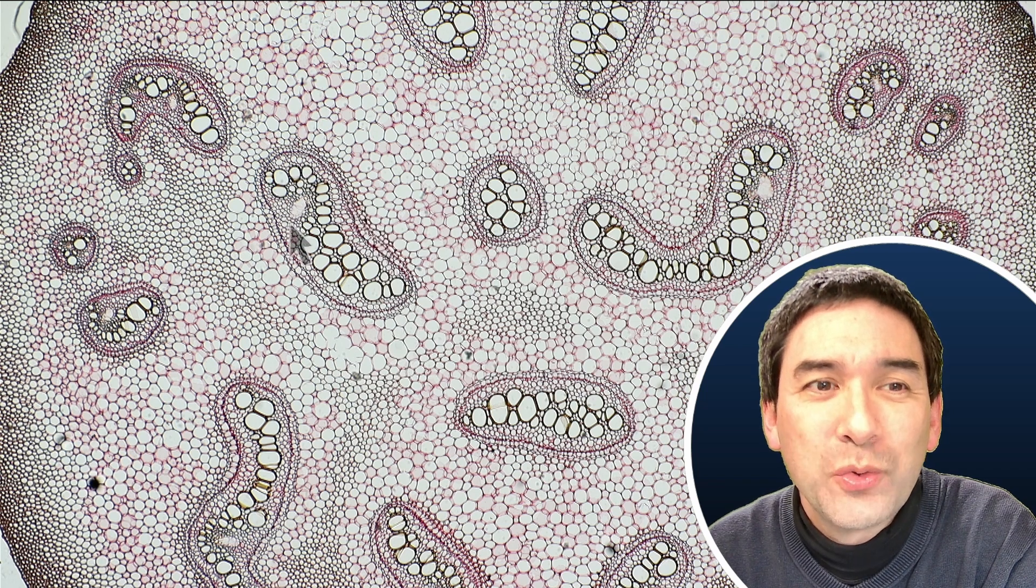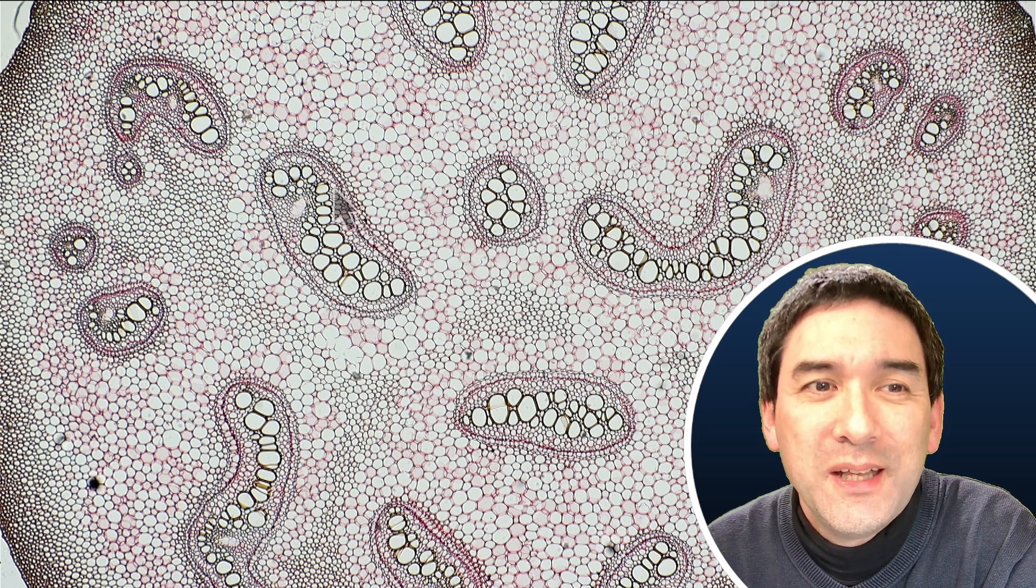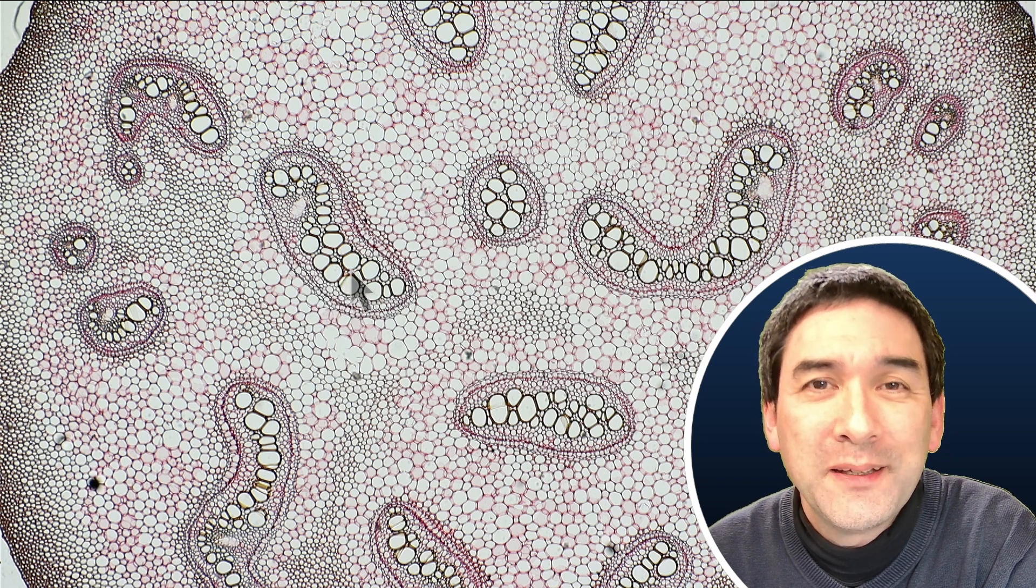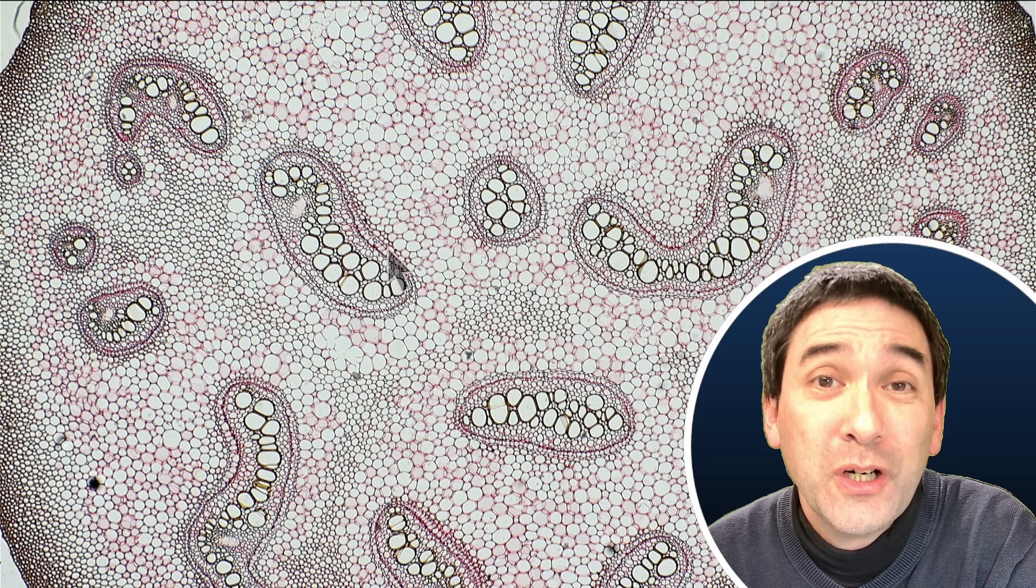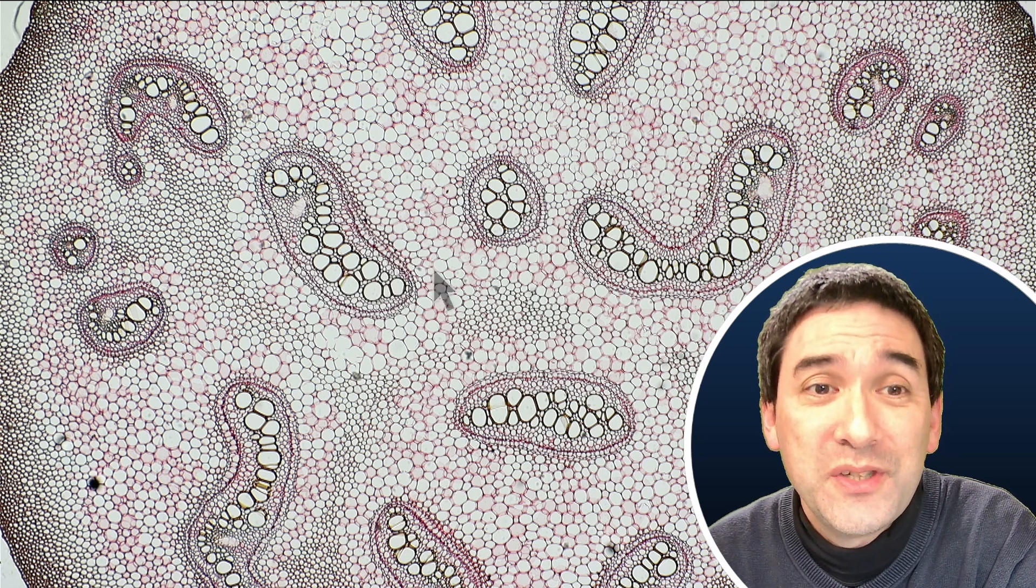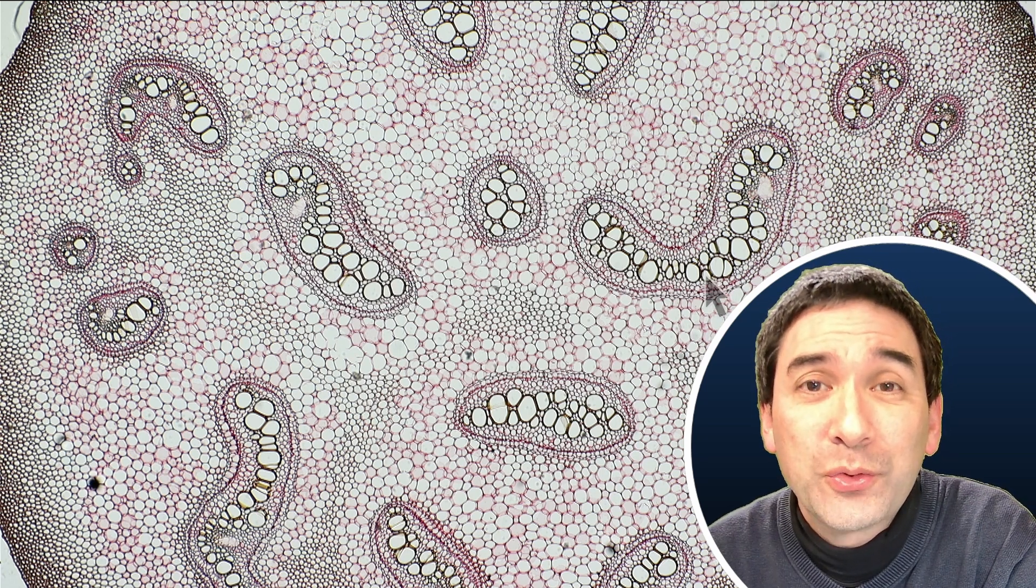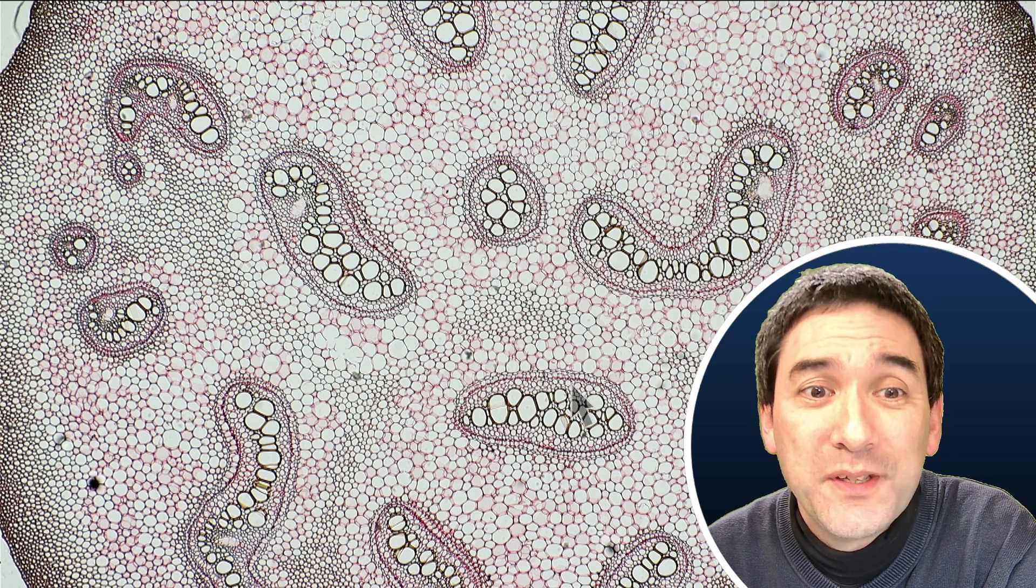What are these? Well, these are the so-called vascular bundles. These are the cells that transport water up the plant and also sap, which contains sugar, down to the roots. So you see that they are scattered throughout the cross section here of the stem.